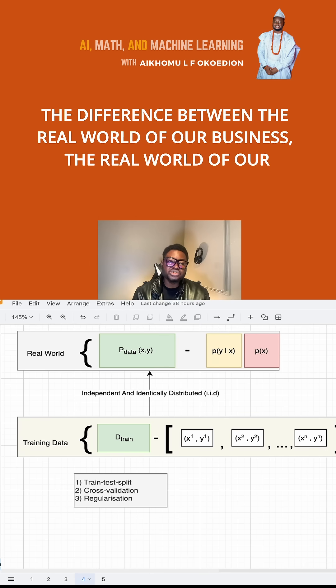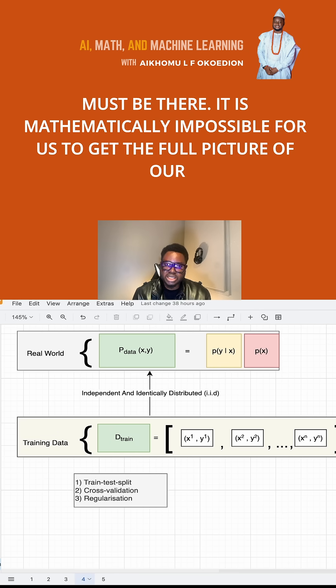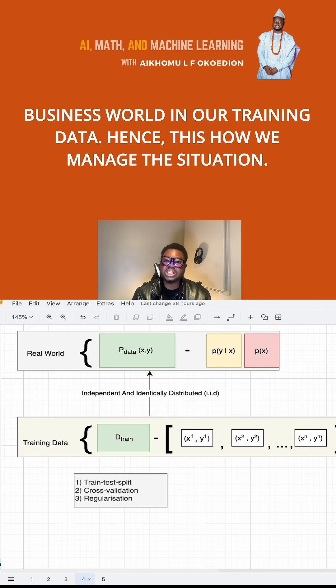The difference between the real world of our business and the data we are able to get - that natural disparity that must be there. It is mathematically impossible for us to get the full picture of our business world in our training data.